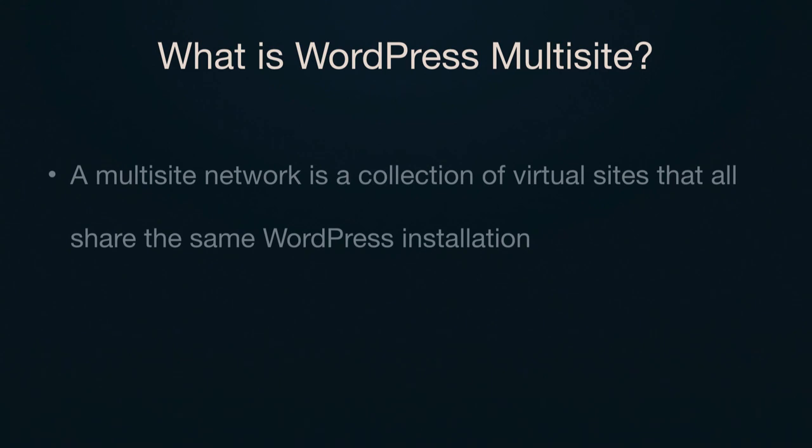What is WordPress multisite? A multisite network is a collection of virtual sites that all share the same WordPress installation. There's actually a really interesting feature hidden away in WordPress that a lot of people don't know about. If you enable it, suddenly WordPress can be not just one site, but that same installed WordPress core files can empower multiple — to hundreds, to thousands, to even millions of WordPress sites — all using the same set of core files on the same server. So it's a really powerful thing.